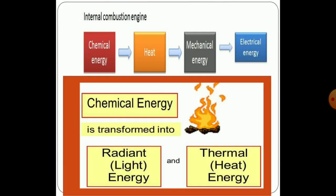An internal combustion engine runs on the basic cycle in which chemical energy from fuels, oxygen, and sparking generates mechanical energy, which also relates to electrical energy. The chemical energy is transformed into radiant energy — that is light energy — and finally used in the form of thermal energy, that is heat energy.